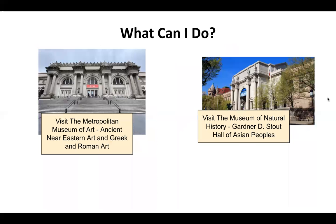Now let's talk about what you can do. I have two great recommendations. The first is visiting the Metropolitan Museum of Art — I specifically recommend checking out the ancient Near Eastern art and the Greek and Roman art sections. You will see so many exciting artifacts and art pieces that directly connect to the societies you'll learn about in social studies. Next, I recommend visiting the Museum of Natural History, specifically the Gardner D. Stout Hall of Asian Peoples. You'll be able to check out interesting artifacts that connect directly to the people you will learn about in social studies. See if a parent or guardian can take you, maybe even with a friend, and take a picture of the two or three most exciting artifacts to show your social studies teacher next year.